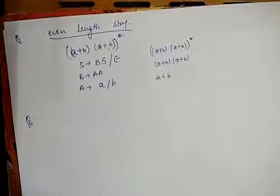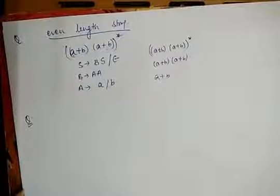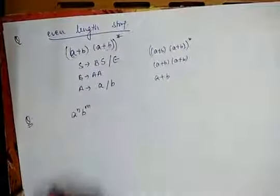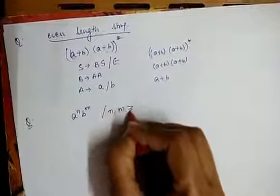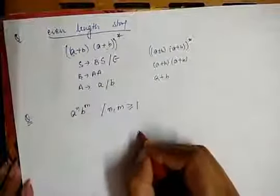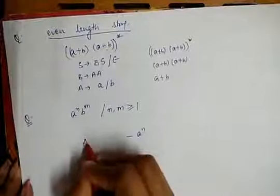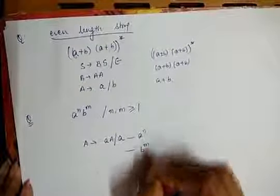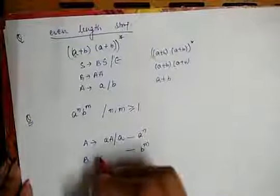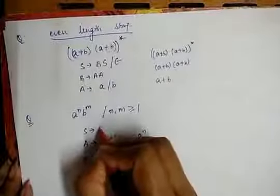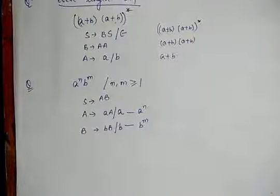Now we take an example of a non-regular language. We have to construct a grammar for the language a^n b^m where n and m are both greater than or equal to one. For a^n we write: X → aX | a. For b^m we write: Y → bY | b. The starting symbol S derives XY. These were examples of how we construct grammar for particular languages.